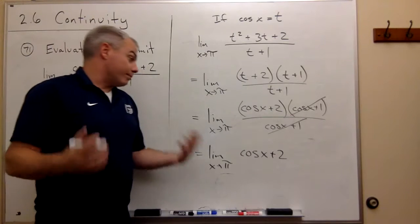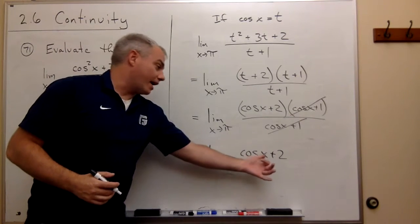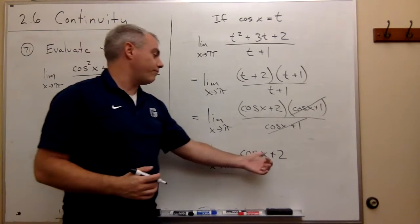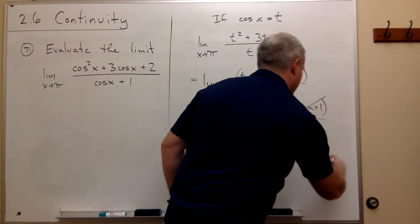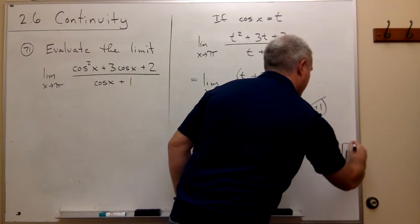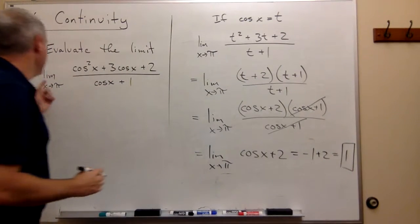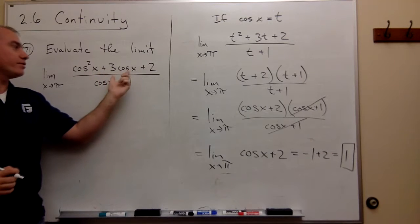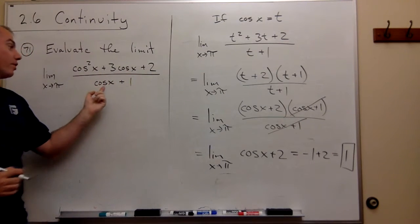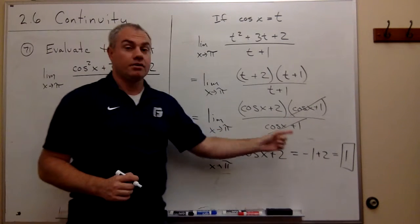Now I get no division by 0. If I plug in pi, cosine of pi is minus 1, so I just get minus 1 plus 2 which is 1. So the limit as x goes to pi of cosine squared of x plus 3 cosine of x plus 2 over cosine x plus 1 is 1.